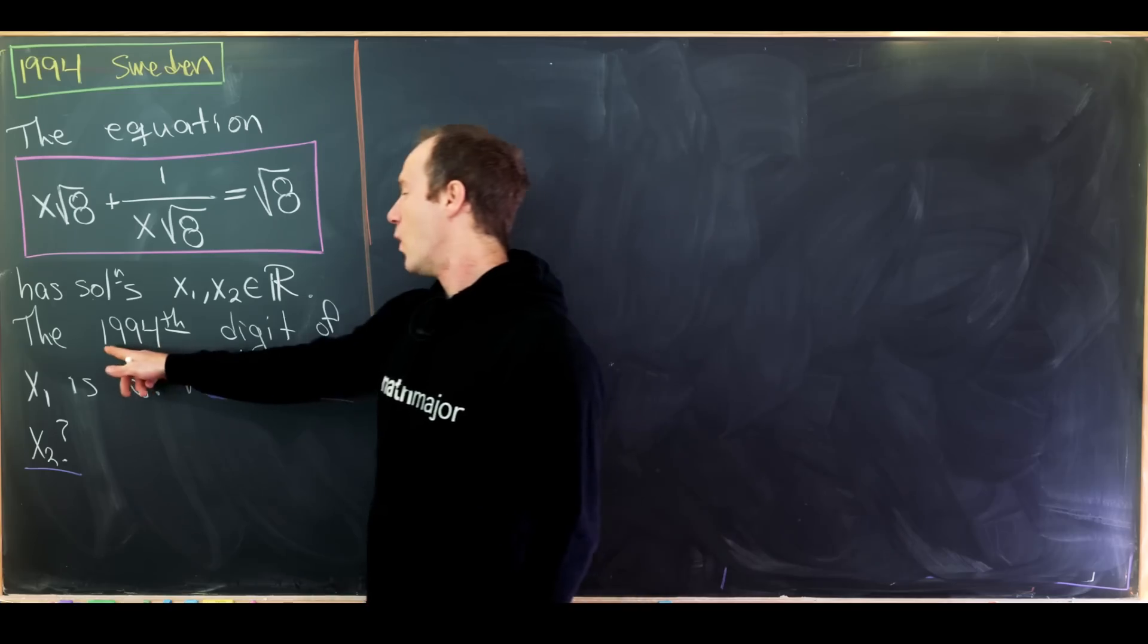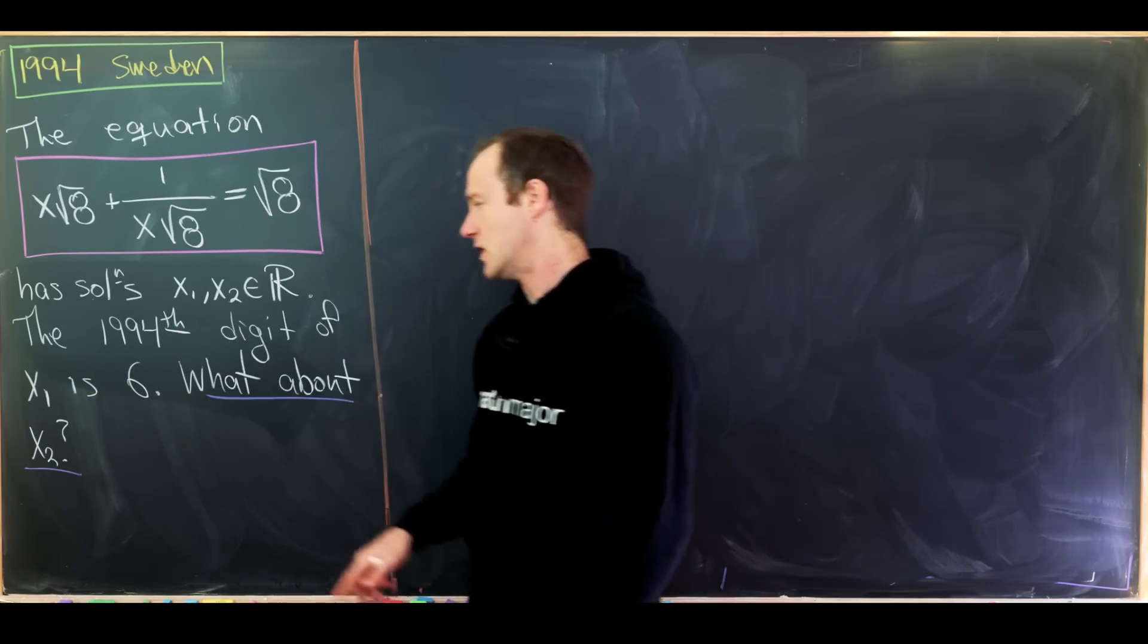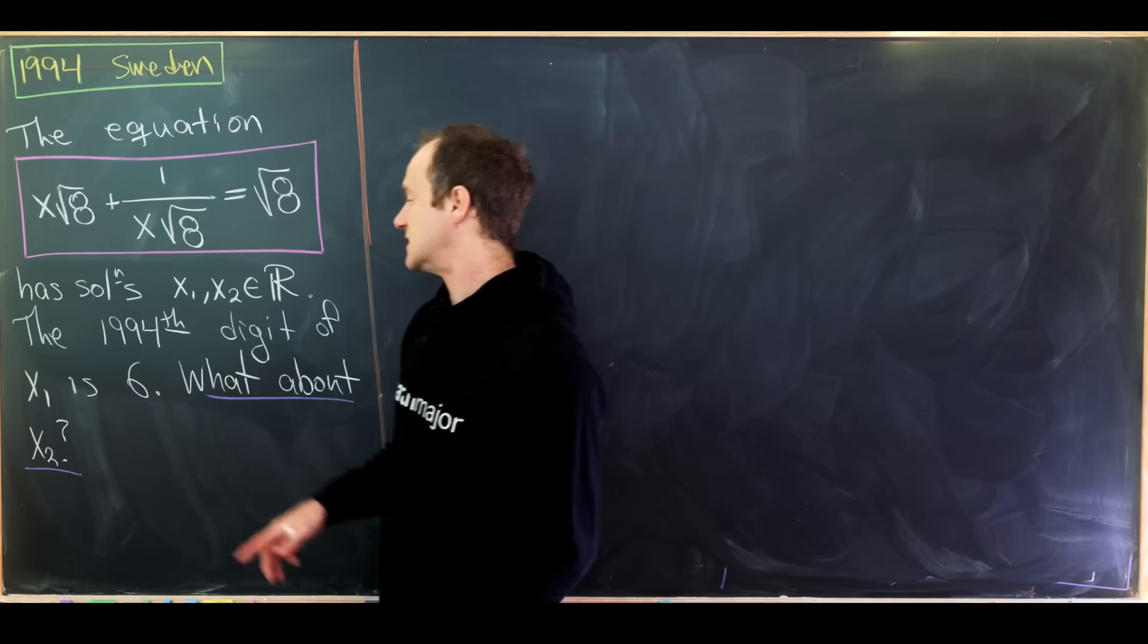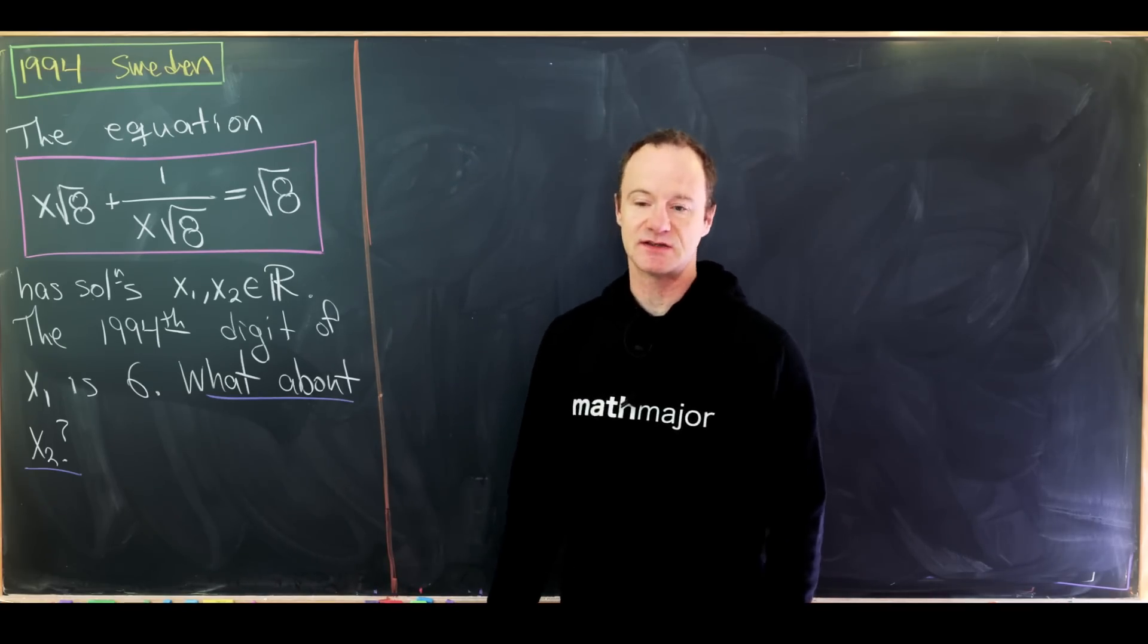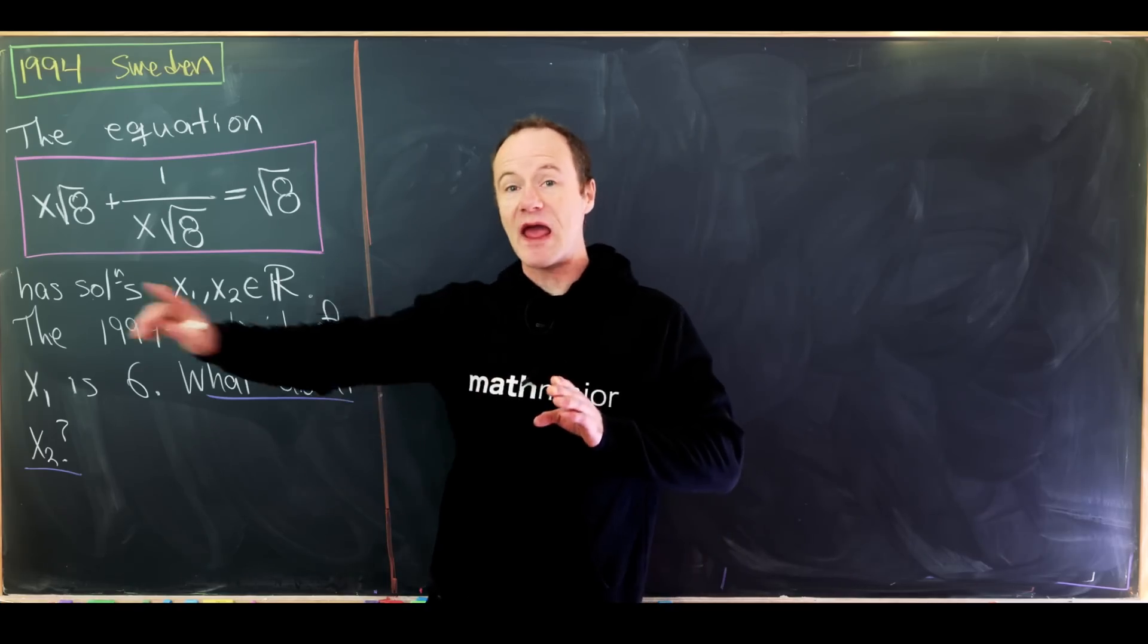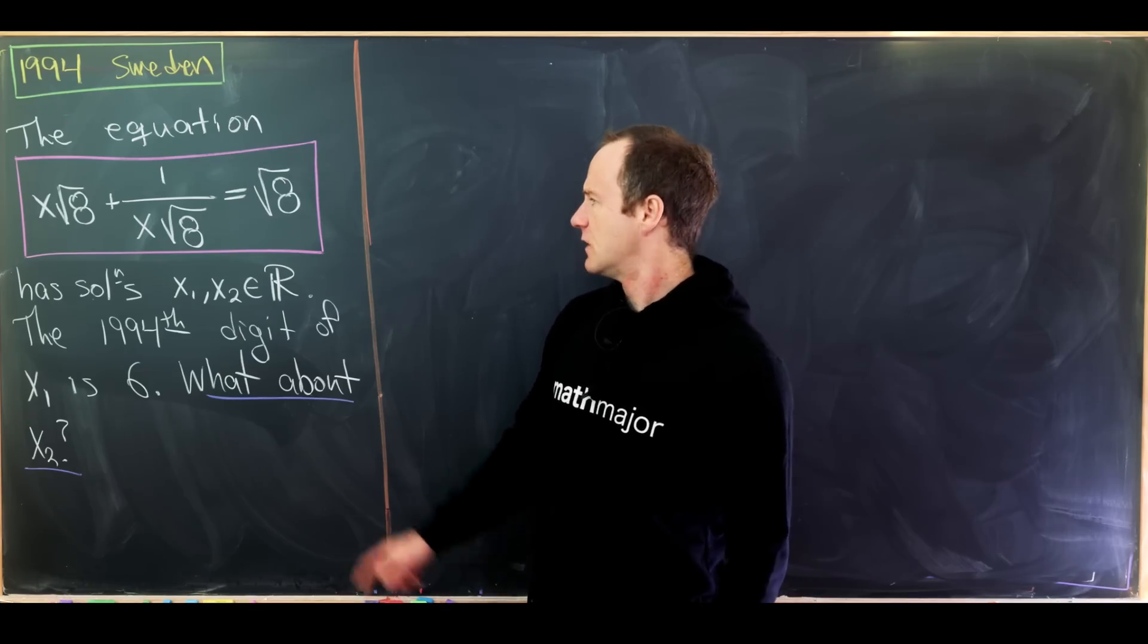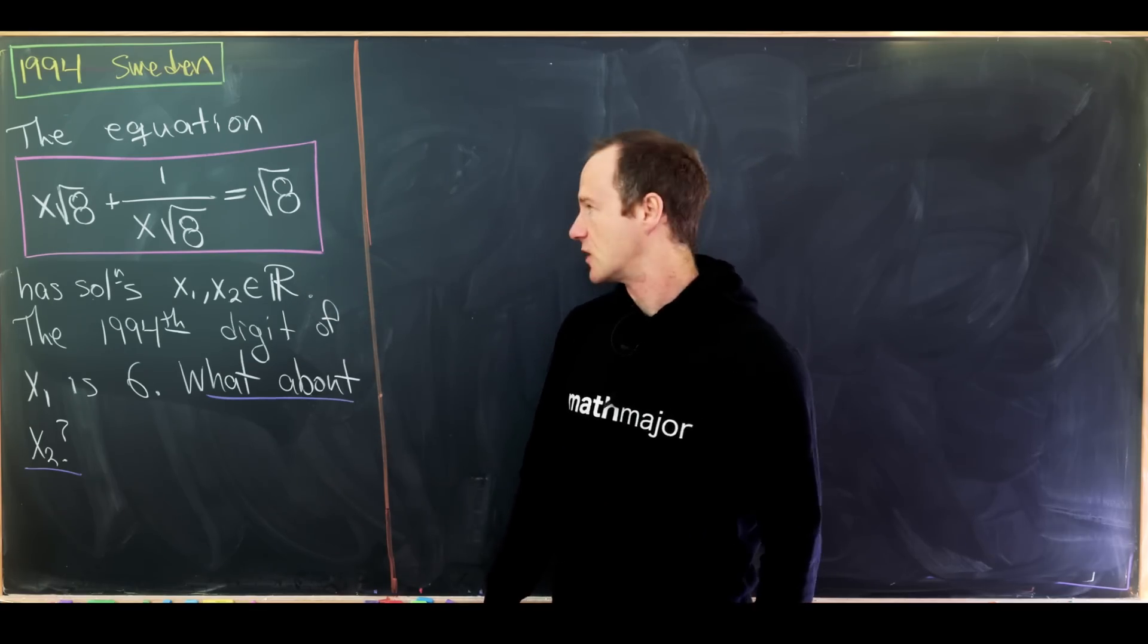The 1994th digit of x1 is the number 6, and then our goal is to determine what the 1994th digit of x2 is. So we're using some information about some digit way down the line of x1 to find similar information about x2. Okay, so let's maybe first solve this equation and see where we can go from there.